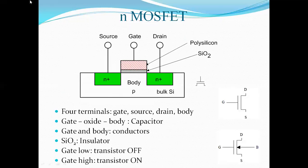This shows the structure of the MOSFET. The MOSFET generally has four terminals: gate, source, drain, and body. The gate is made up of polysilicon material. The source is attached to an N-type semiconducting material and the drain is attached to the second N-type semiconducting material.